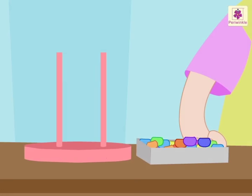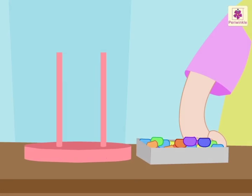Look at the abacus now. Here, there are no beads in the tens rod. That means zero tens. And four beads in the ones rod. That is four ones.